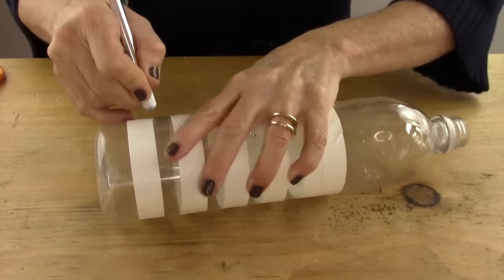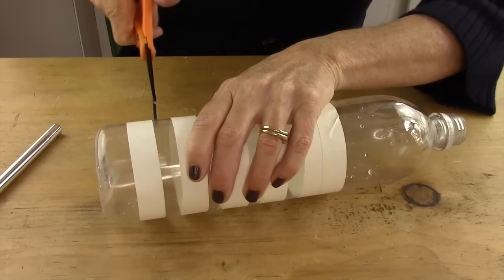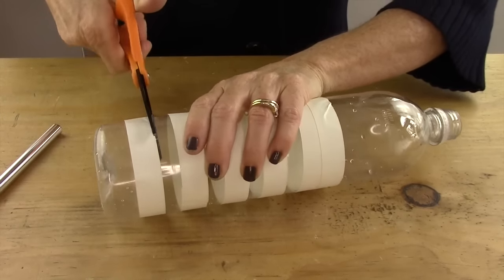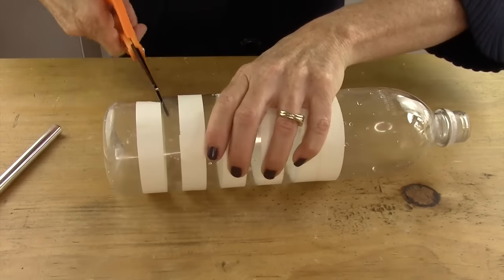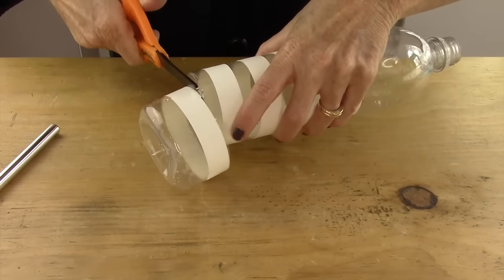Next, take your craft knife and poke it in right next to the tape so you have a nice little space to put your scissors. Then cut all along the tape line, doing that on both sides of each tape bracelet.